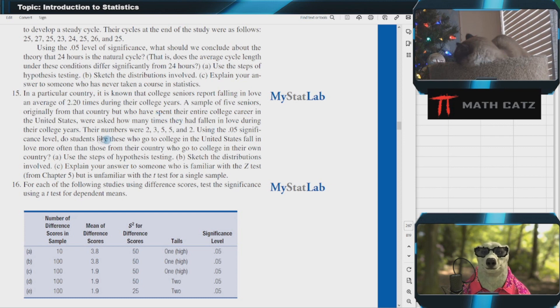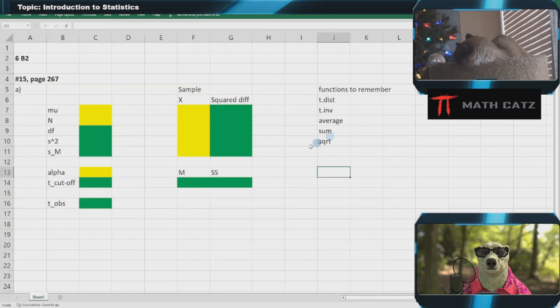The question is: do students like these who go to college in the U.S. fall in love more often than this 2.2 based on this sample? I'm going to use Excel just as a glorified calculator for convenience, but you can totally do this by hand as well.